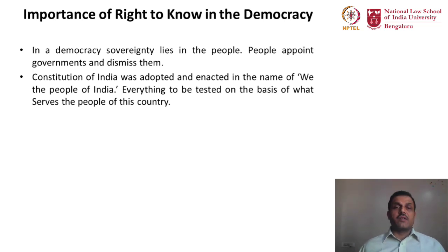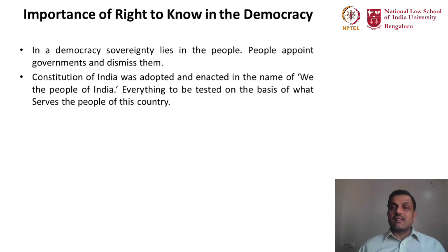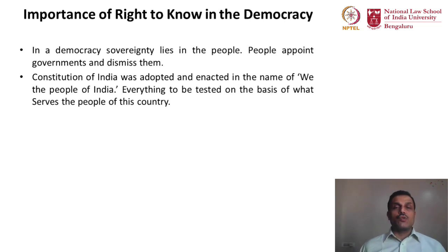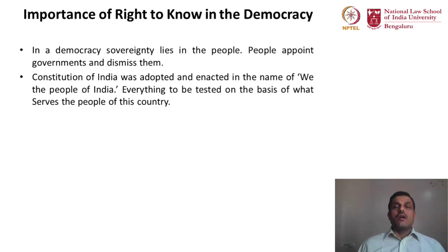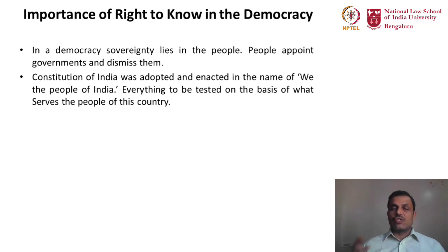Under Article 141 and 142 of the Constitution of India, when the Supreme Court says something in its judgments, directions and orders, it is considered the law of the land. The Supreme Court is empowered by the Constitution to lay the law, to state the law, to interpret the law, and that becomes the final basis on which we understand how rule of law is placed in this country. What the Supreme Court ordinarily does is check government actions and institutions to see whether they have acted in public interest.